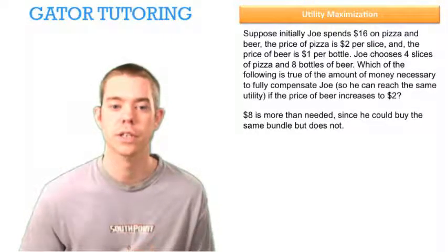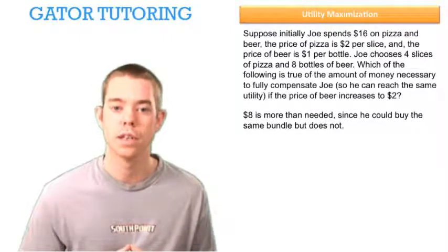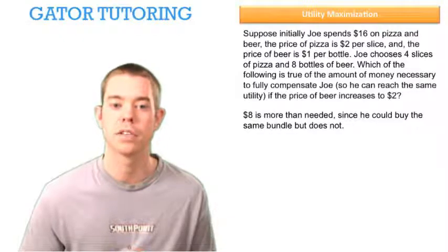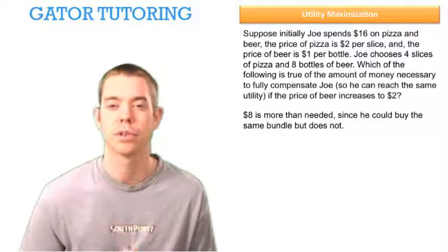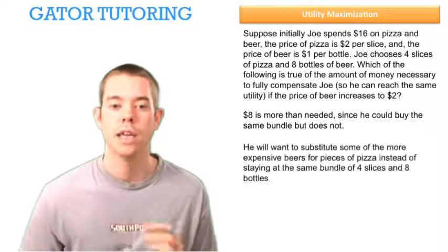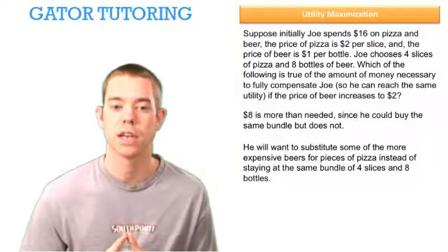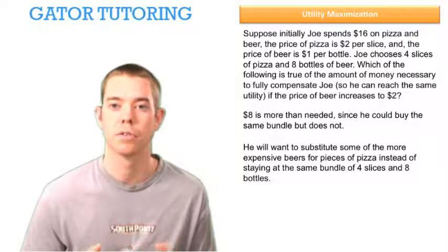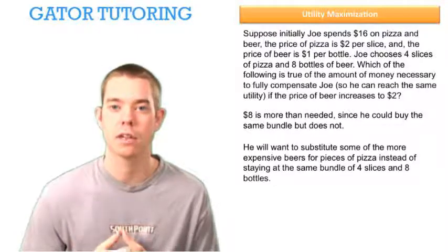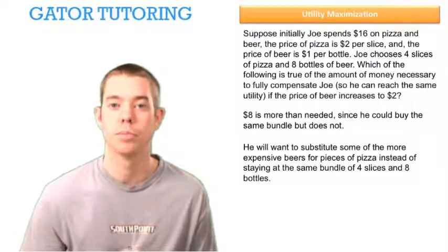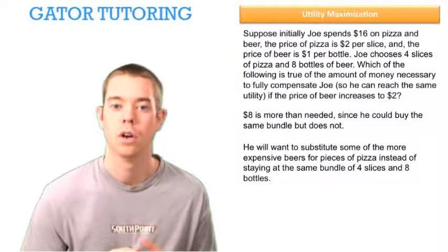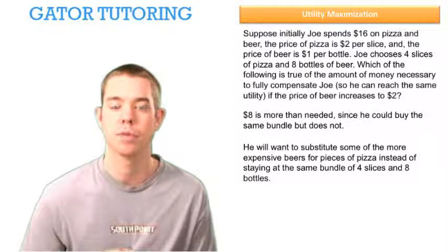The answer is $8 is more than needed since he could buy the same bundle but does not. We know that $8 would allow him to continue to buy the same bundle he was buying, which was the 4 slices of pizza and the 8 bottles of beer. He will want to substitute some of the more expensive beers for pieces of pizza instead of staying at the same bundle.